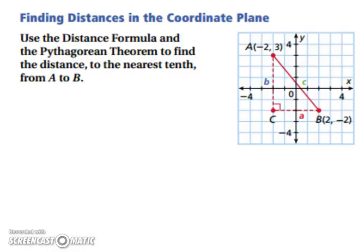Let's try one. Use the distance formula and the Pythagorean theorem to find the distance to the nearest tenth. We're familiar with the distance formula, so let's start with that. And then if we get the same answer when we use Pythagorean theorem, we know we've done it right.